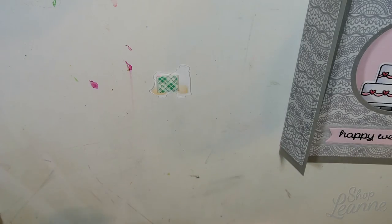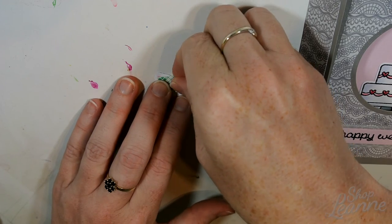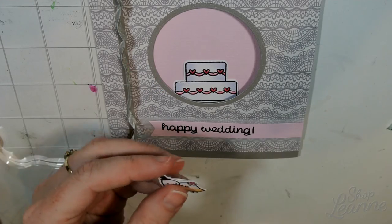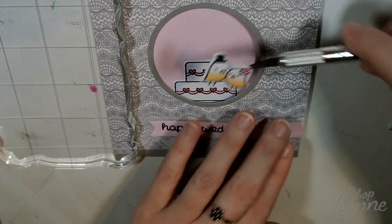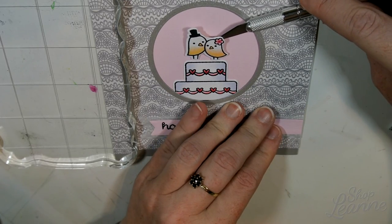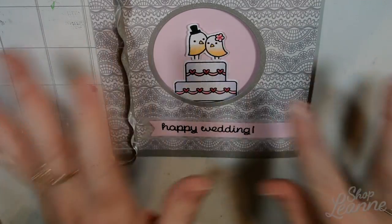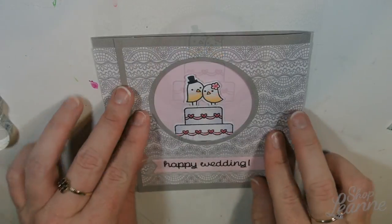For the chick—the bride and groom chick—I'm going to put them on foam tape. I want them to pop up from the circle because they are the focal point. I'm just elevating those with some Scotch foam tape. Again, just using my X-Acto knife to position them and then pushing them into place once I'm happy with their placement.